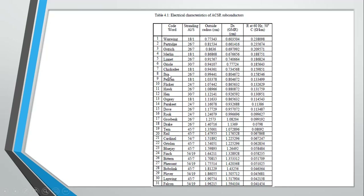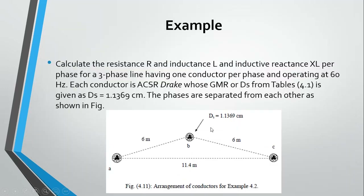There are many standards used for aluminium conductors. These standards are named by electrical engineers, and they list values such as the strand configuration — for example, 18/1 means a diameter of 18 with 1 conductor. Different kinds of conductors are available and listed in reference tables.